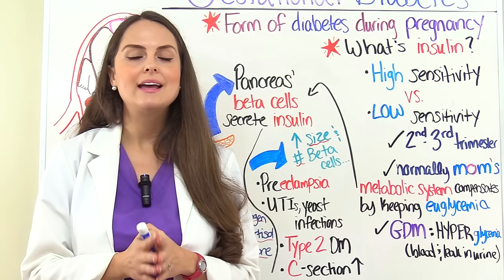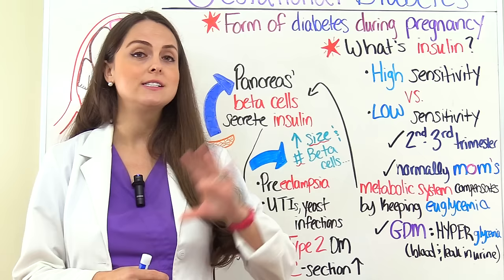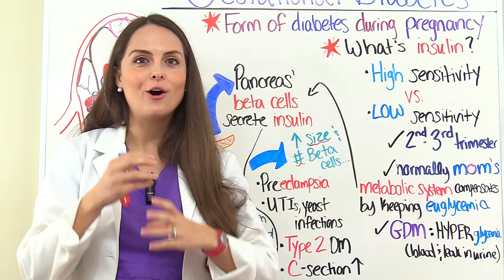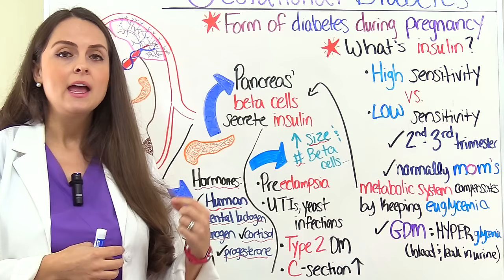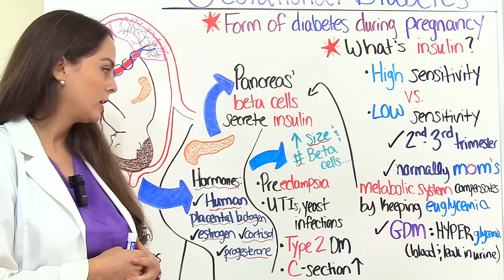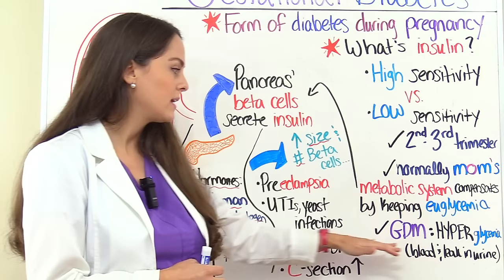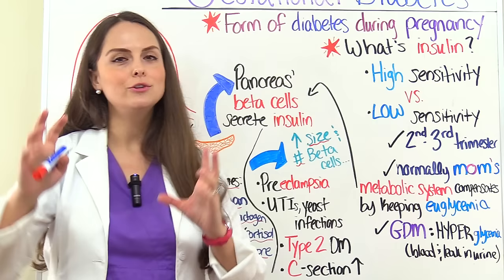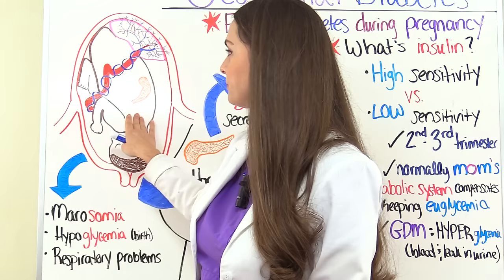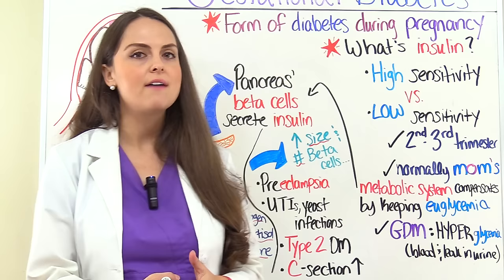Also, these high glucose levels are going to be hard on the cardiovascular system — that sugar is going to harden those vessels. So that can lead to hypertension, which can cause preeclampsia and protein in the urine. That can also cause preterm labor. It also increases her chances of developing type 2 diabetes. And because we have more glucose in her blood, more glucose is going to go to the baby and increase the baby's size, which increases her risk of having a cesarean section.